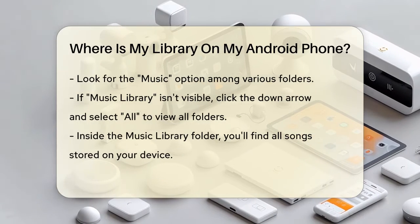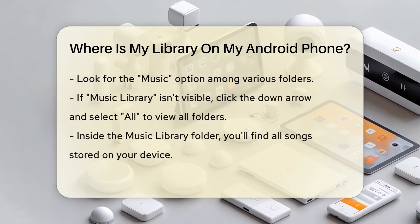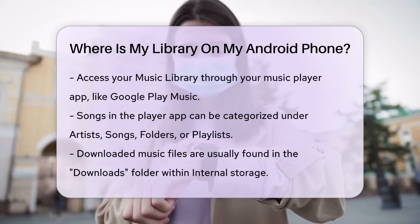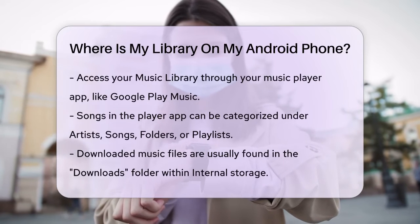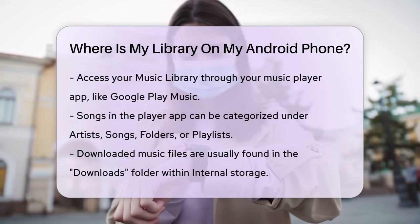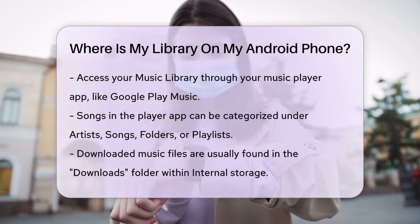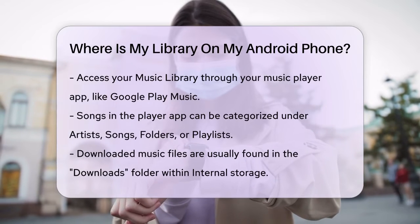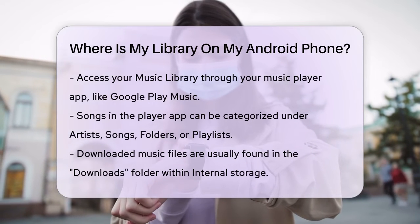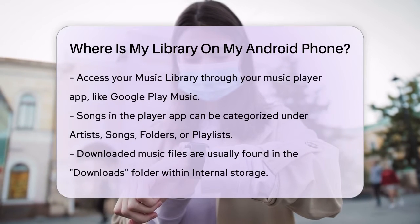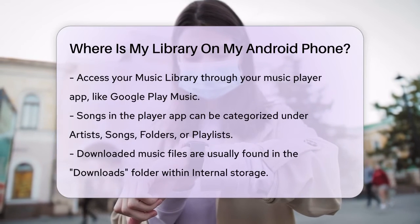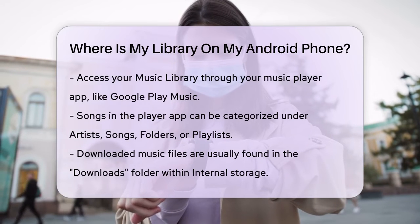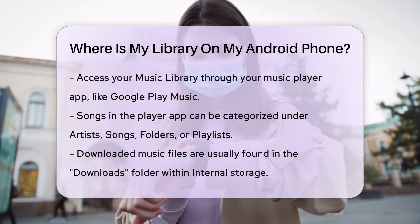Another way to access your music library is through the Music Player app on your phone. For example, if you're using the Google Play Music app, you can navigate to the Play Music screen. Here, you'll find your songs categorized under Artists, Songs, Folders, or Playlists.